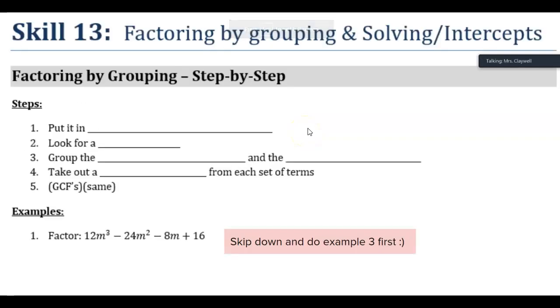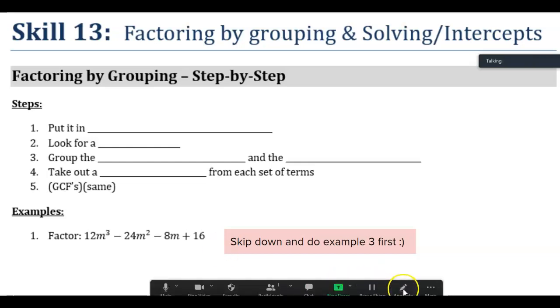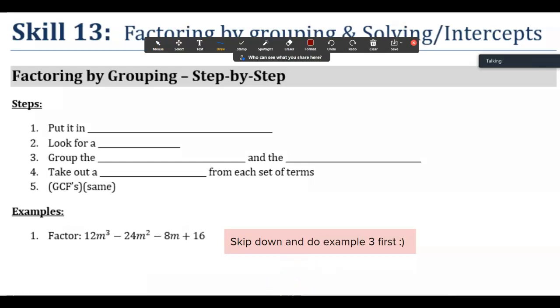Okay, we just did example three. We're going to jump back up to number one. So we already filled in this top part, we just haven't done the actual problem. I'm going to look, my first thing I think about is do any of these have a greatest common factor? You're looking at 12, negative 24, negative 8, and 16.